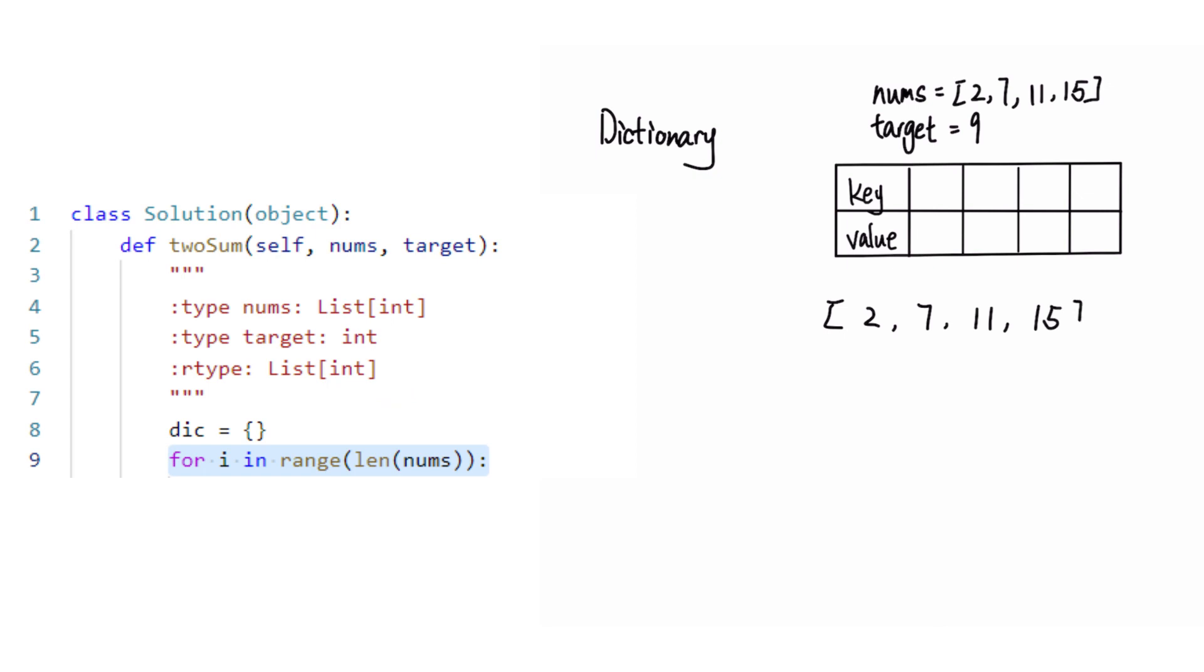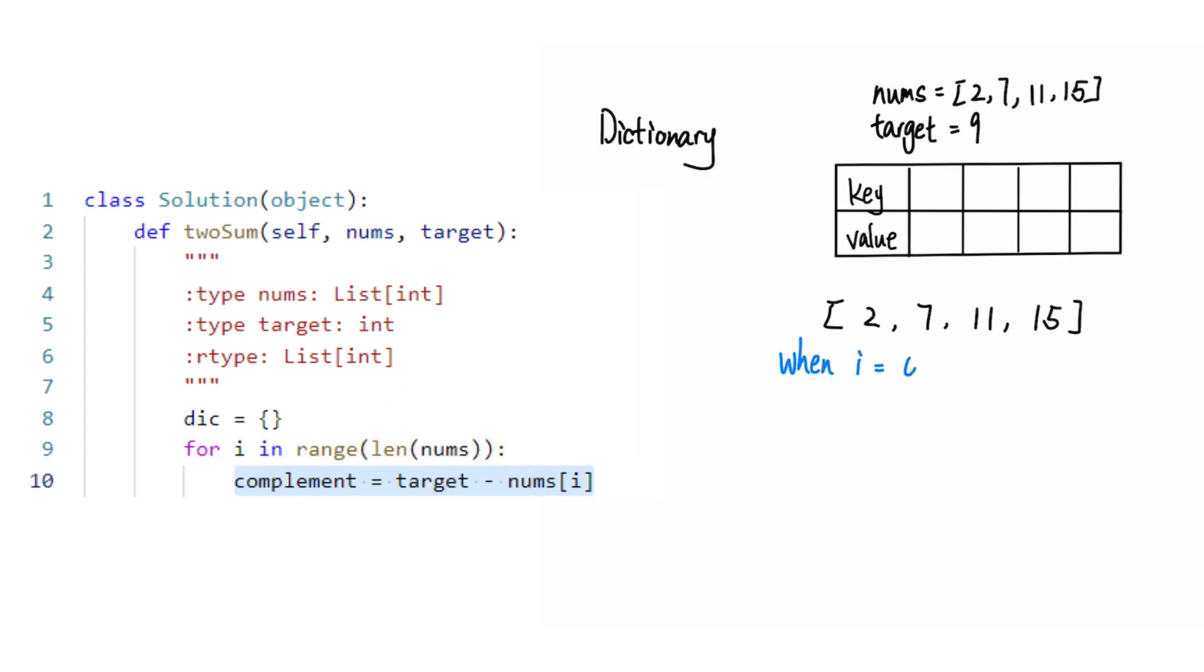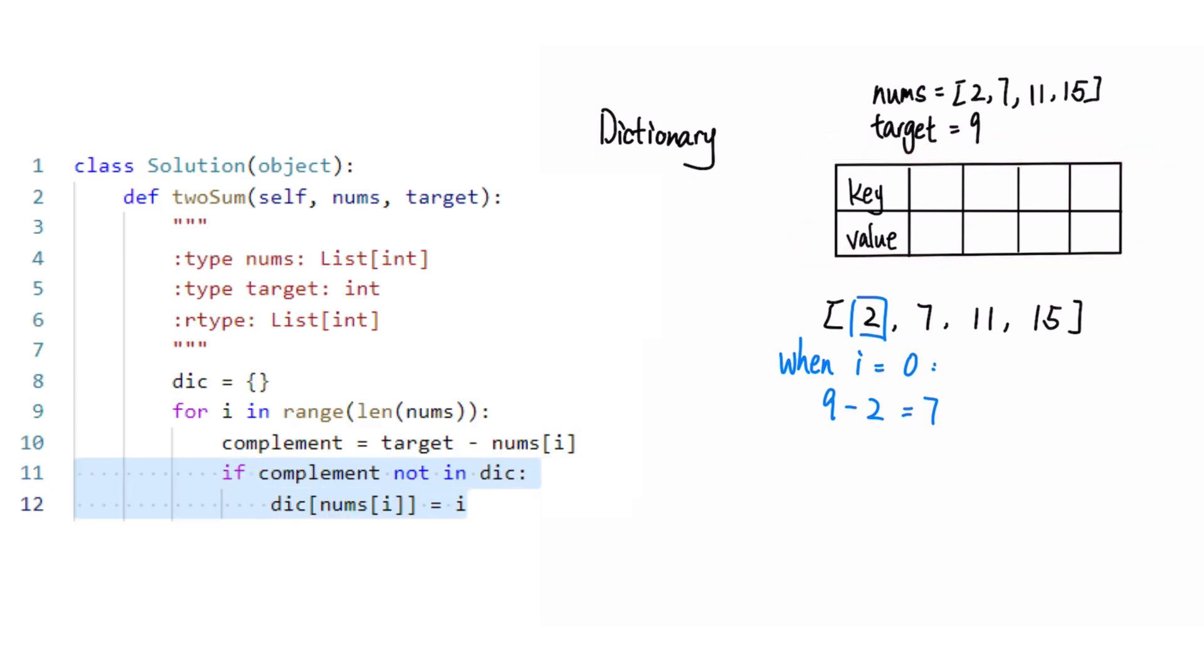We can then iterate through the array and for each element, we check if the complement, which is the target minus the current element, is already in the dictionary. If it is not, we add a current element to the dictionary and continue the loop.